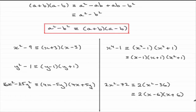I hope you've been able to follow this particular idea. If you spot this pattern — a squared minus b squared, called the difference of two squares — you can now start to factorise expressions like this into the form a plus b times a minus b.